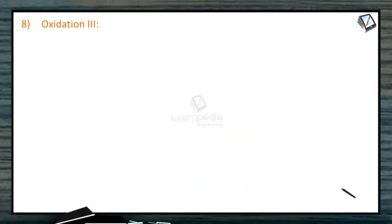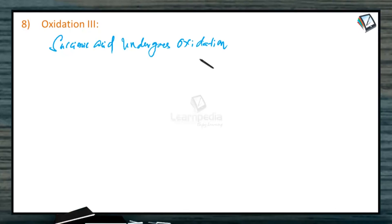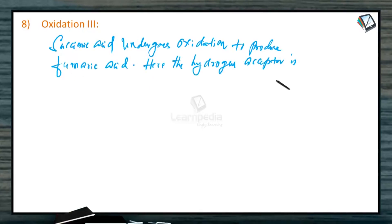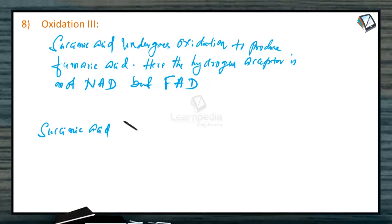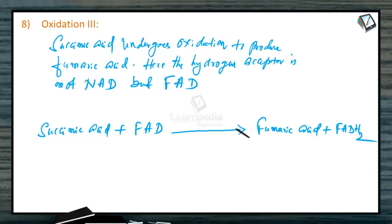The next reaction is the third oxidation. Here, succinic acid undergoes oxidation — remember, oxidation means removal of hydrogen — to produce fumaric acid. The hydrogen acceptor here is not NAD but FAD (flavin adenine dinucleotide). The reaction is: succinic acid plus FAD gives fumaric acid plus FADH₂. Since succinic acid is oxidized, the enzyme is succinic dehydrogenase.